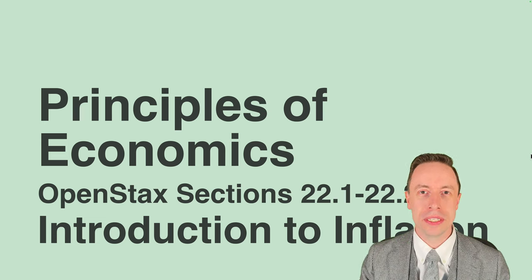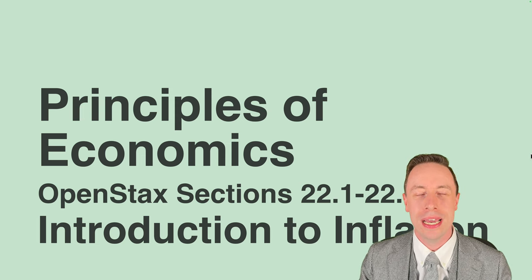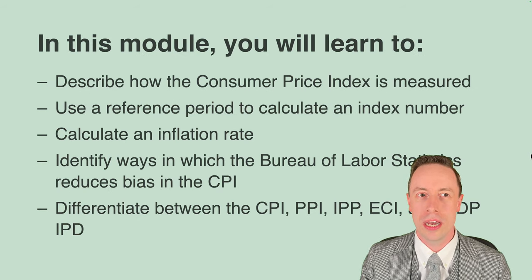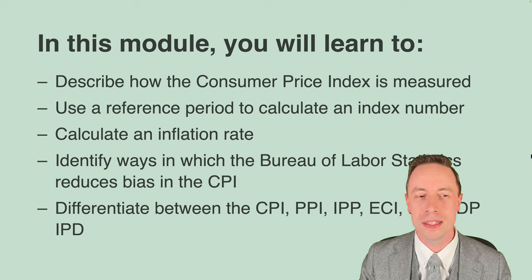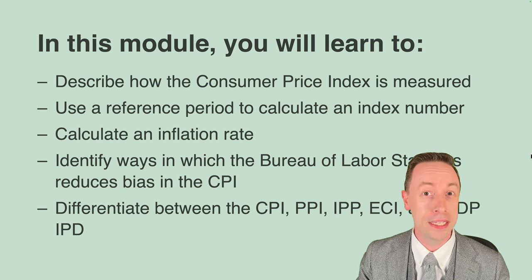Hello everybody, this is Philip Jonas at Kalamazoo Valley Community College presenting OpenStax Principles of Economics. Today we're covering sections 22.1 and 22.2, introduction to inflation. In this module you will learn how to describe how the consumer price index is measured, how to use a reference period to calculate an index number, how to calculate an inflation rate, how to identify ways in which the Bureau of Labor Statistics reduces bias in the CPI, and how to differentiate between the CPI, PPI, IPP, ECI, and GDP IPD.